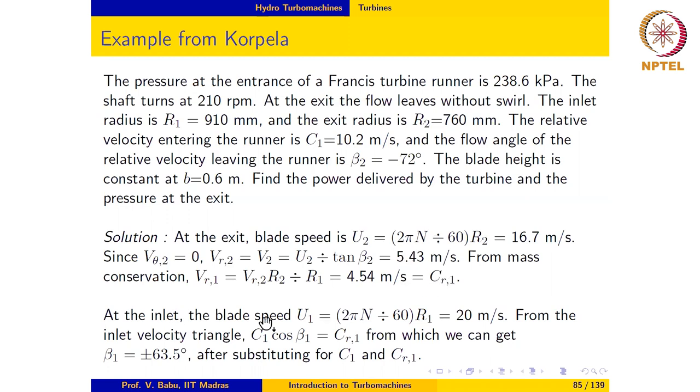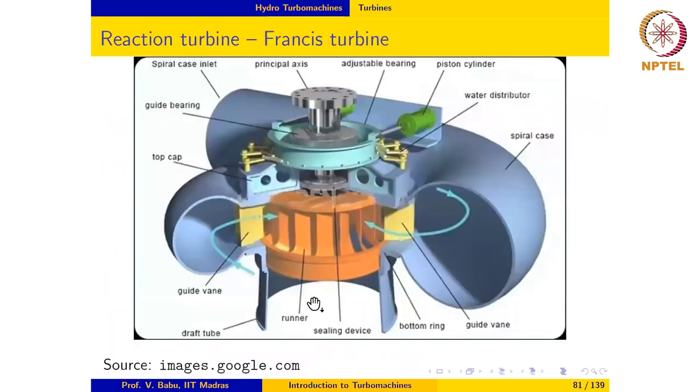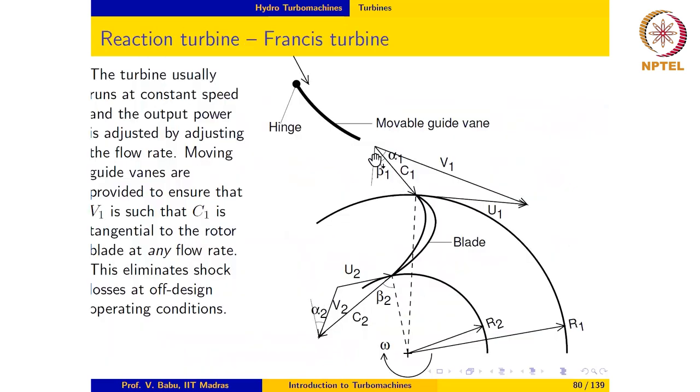At the inlet, the blade speed may be calculated as 20 m per second. From the inlet velocity triangle, C1 cosine β1 is equal to Cr1. If you look at the inlet velocity triangle, C1 cosine β1 is equal to Cr1.